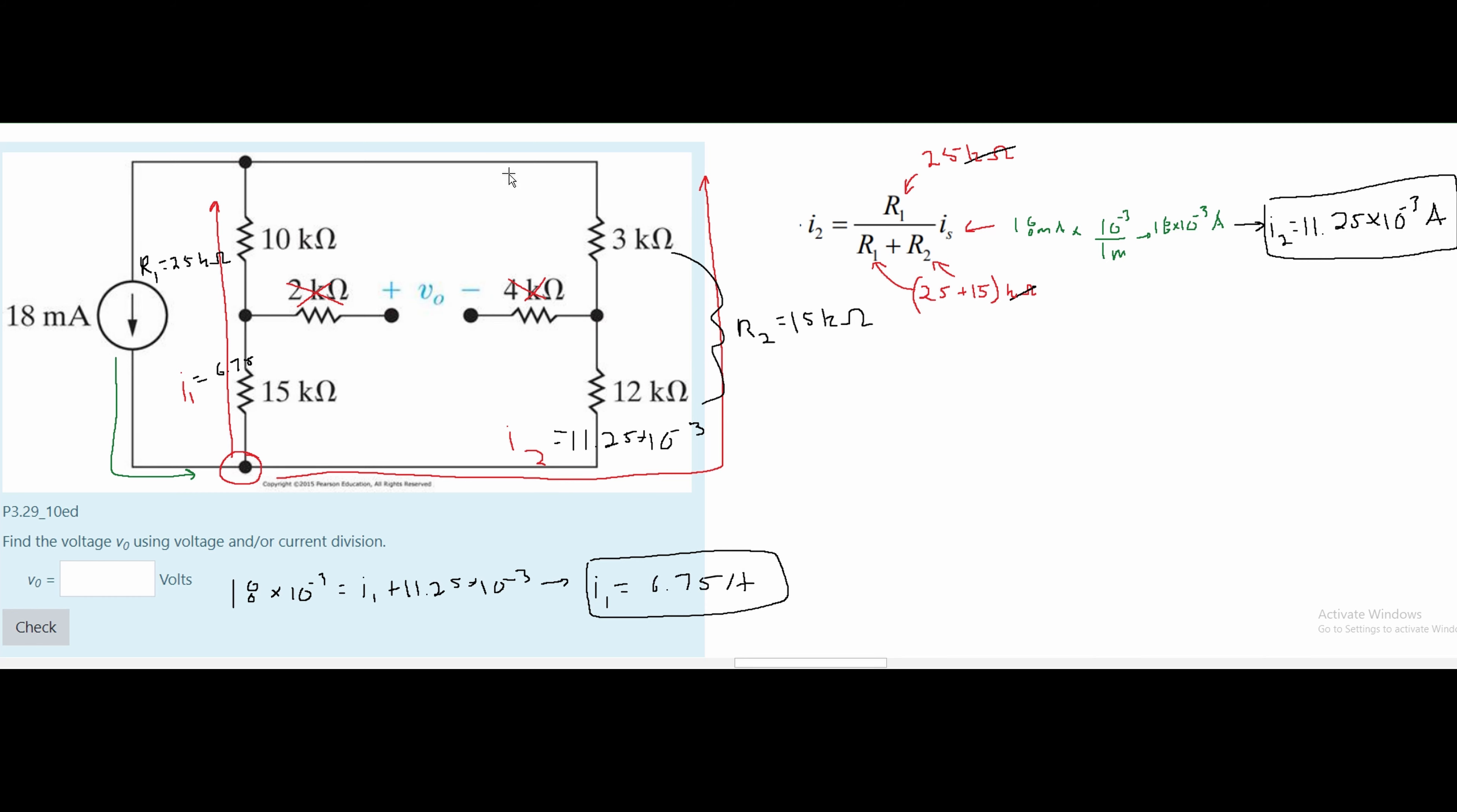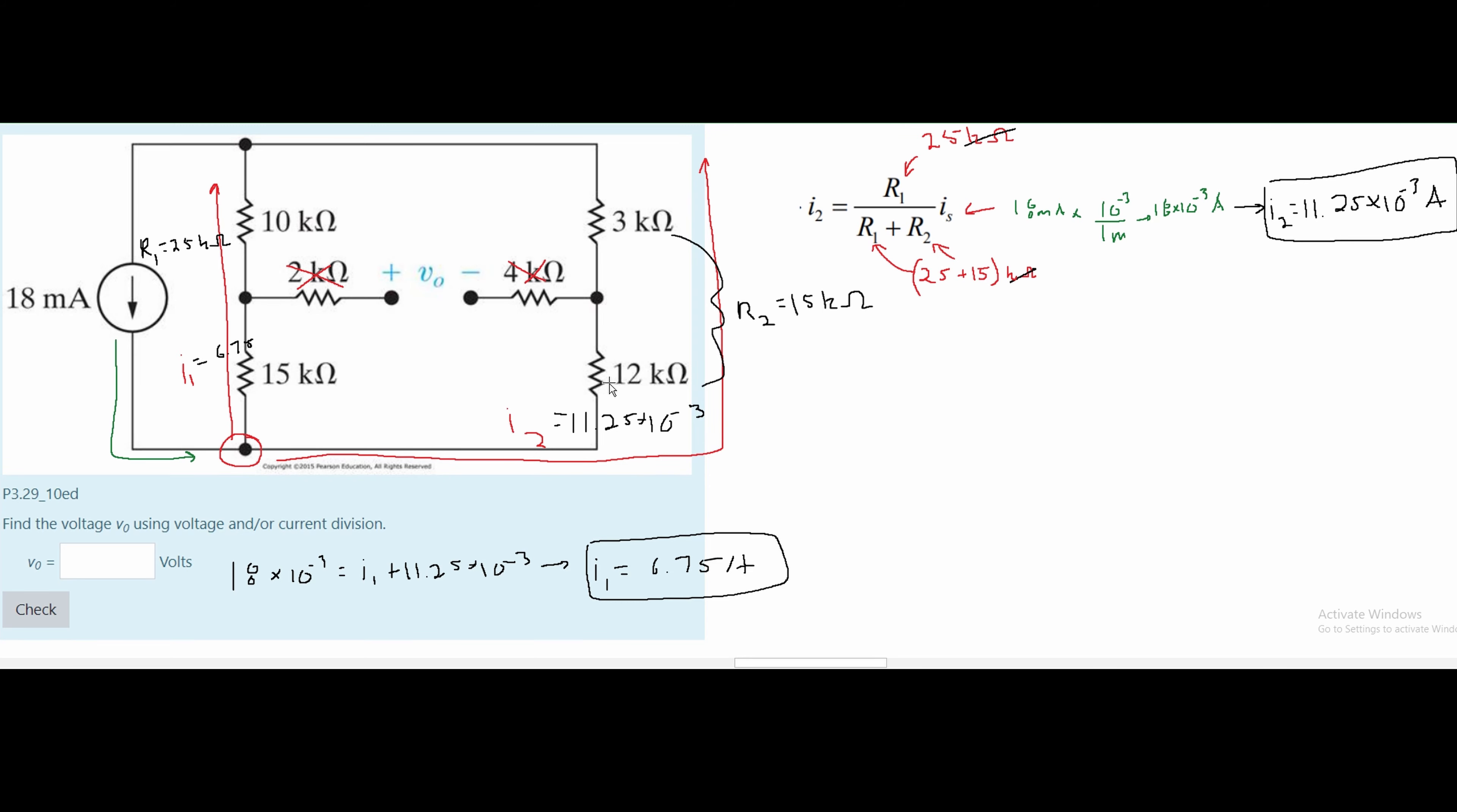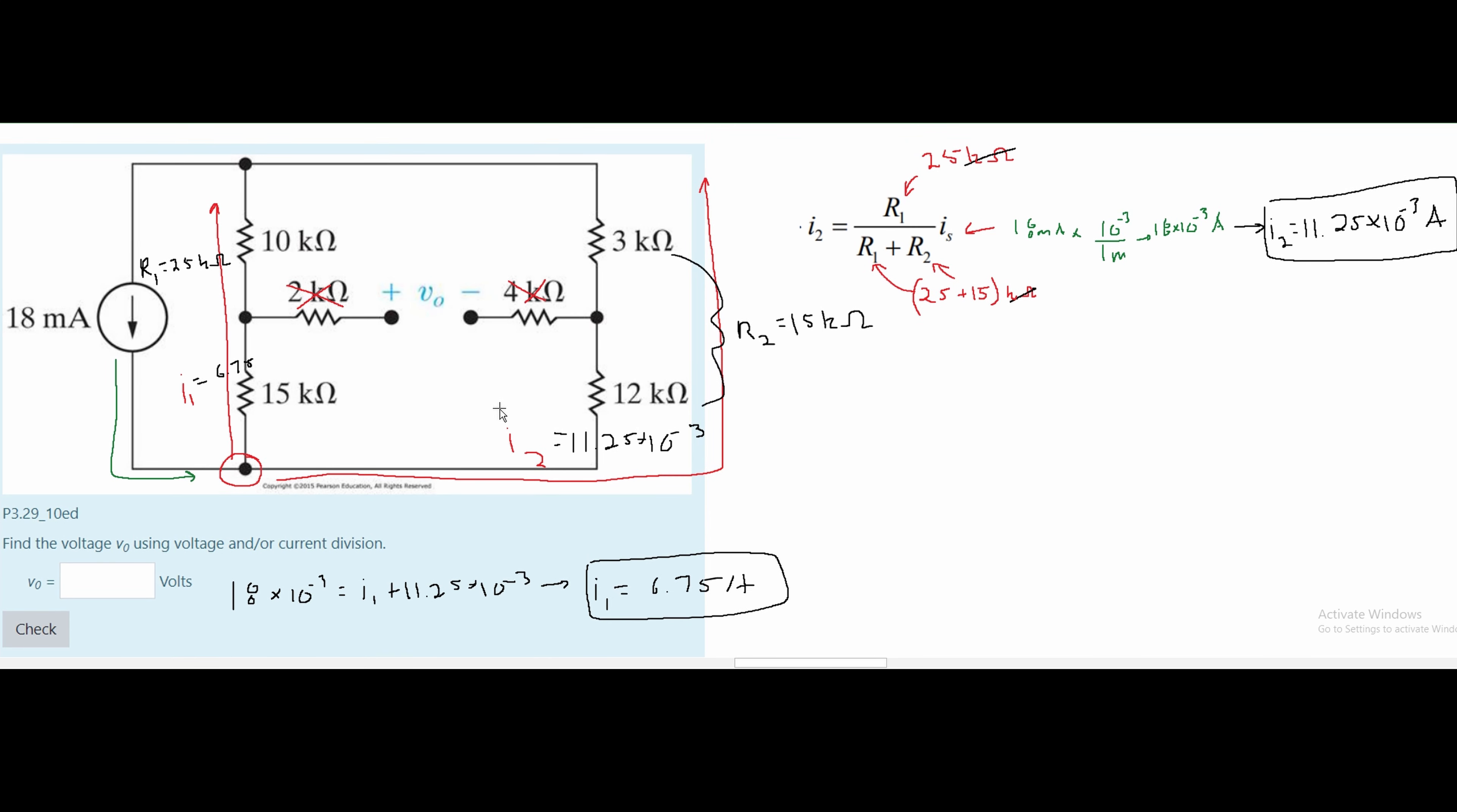We can use Kirchhoff's voltage law and either use all the stuff up here or we can use all of the stuff down here. I'm going to look at the bottom part, but I think both would work just the same. If we use Kirchhoff's voltage law, which is in the notes linked below, we know that the voltage flowing through a system must equal zero and the system must be closed. So we're going to look at the bottom closed system.